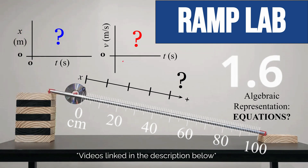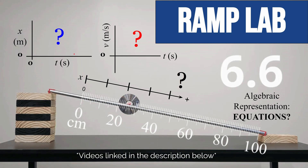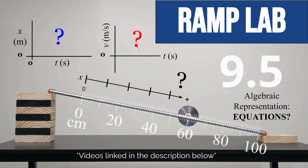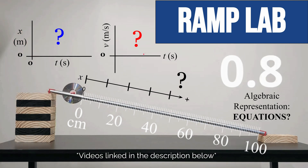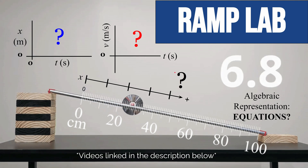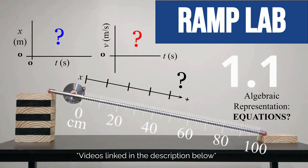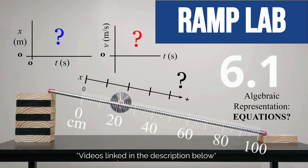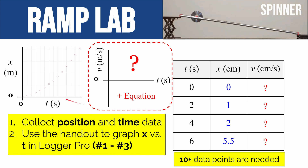At this point in class, you've already collected position versus time graph data and made a graph. Now I want to talk about how we're going to use that graph to calculate how fast the spinner was going at specific times, so we can graph velocity versus time and ultimately come up with an equation for that. If you've not collected data already, there are videos linked in the description below. You should have already collected your position and time data — where was the front of the spinner each and every second?